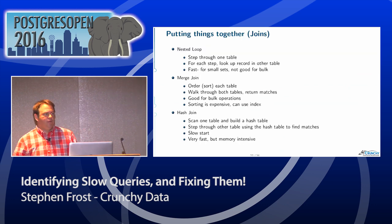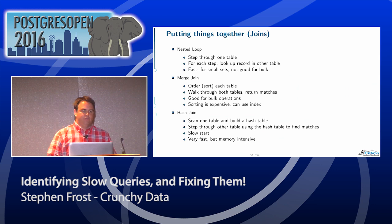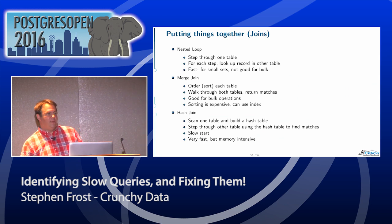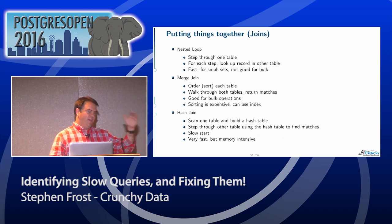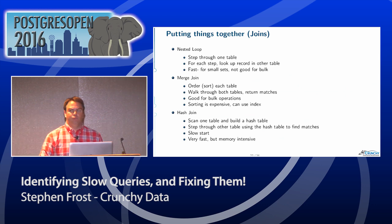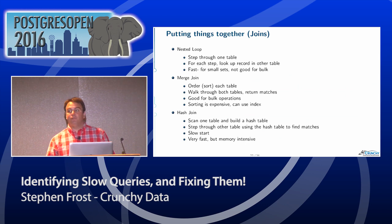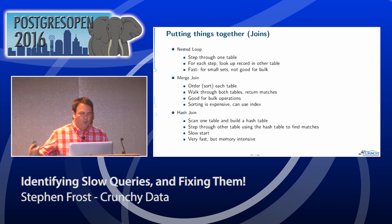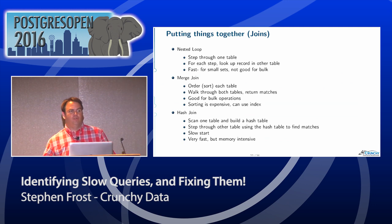Now let's talk about joins — how we're putting these things together. We have a nested loop join, which means we step through one table and every time we get a record, we go look up the record in the other table that we need. This can be really fast for small data sets, but it tends to be slow for large data sets because we're continually doing that index lookup, which adds a lot of time.